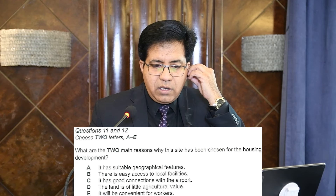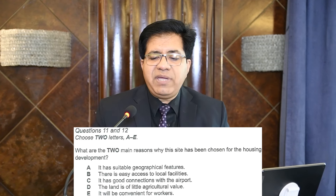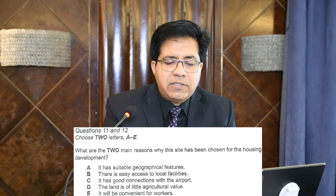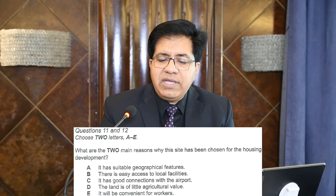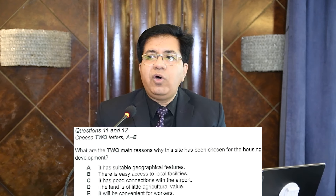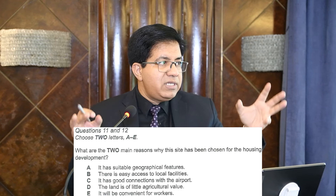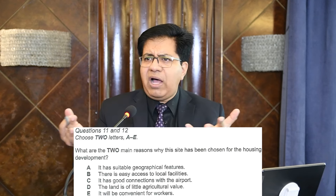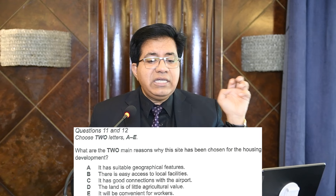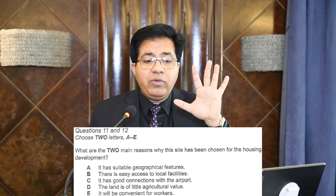Part two, questions 11 and 12: choose two letters A to E. What are the two main reasons why this site has been chosen for housing development? Underline 'two main reasons' and underline 'site has been chosen.' Imagine they have chosen a site for housing colonies — what are the two reasons why they chose this site?